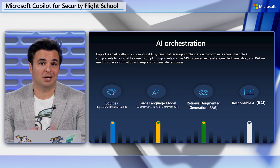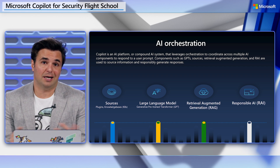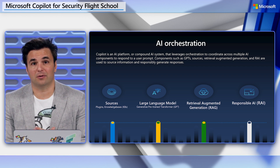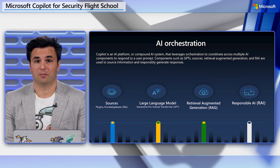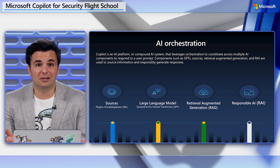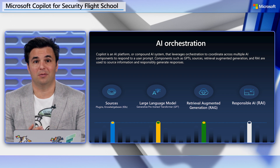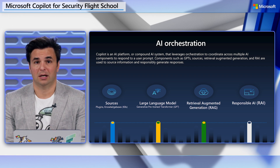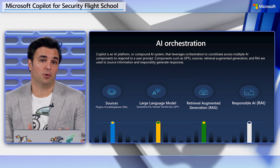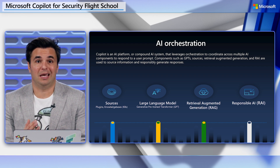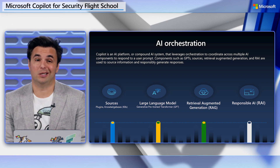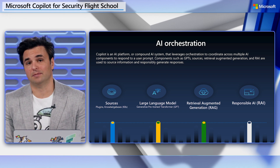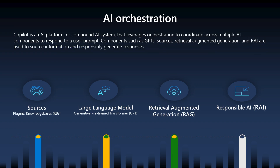Working with AI in complex and specialized spaces like cybersecurity or IT makes it difficult for LLMs alone to be successful. Relying solely upon an LLM and fine-tuning processes doesn't work well because of the nature of the domain — it's a fast-evolving, highly fragmented ecosystem. Training a new model, which is laborious and expensive, would be dated the moment a new system or the need for current data is introduced. Instead, architecture built from the ground up to address both those complexities is needed.